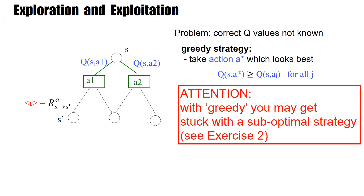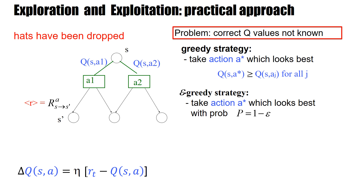And this is called the exploration-exploitation dilemma. The Q values are not known, and you want to play the best one — the one that looks highest — but then you get stuck. In the following, I will omit the little heads that indicate estimates, since we never have the correct Q values available. The problem is that the correct Q values are not known, and so we have to work with estimated Q values and take the one that looks best.